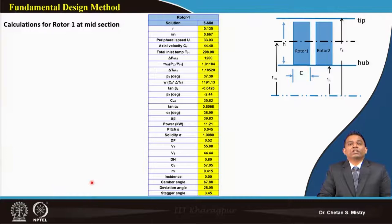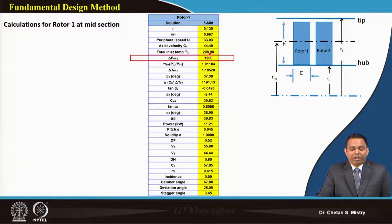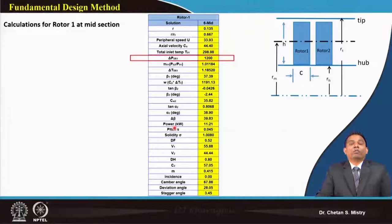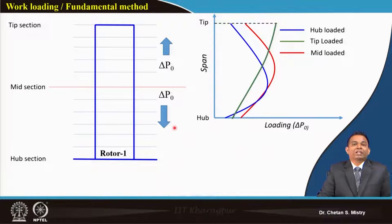The Excel sheet summary at the mid station for rotor 1 shows: pressure rise 1200 Pa, diffusion factor 0.52, D'Haller's factor 0.80, and camber angle 67.88°. These are all the parameters calculated at this particular station.